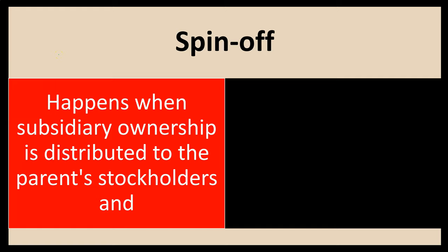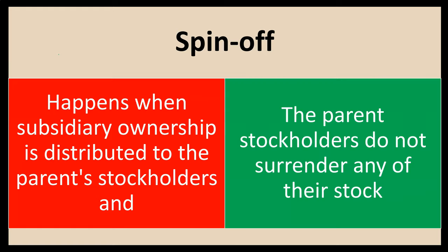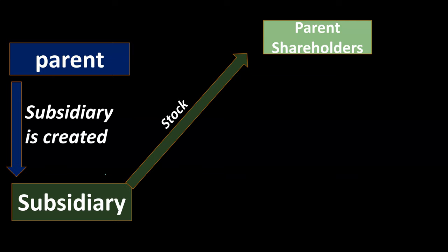We also want to be aware of the idea of a spinoff. A spinoff happens when subsidiary ownership is distributed to the parent stockholders and the parent stockholders did not surrender any of their stock. If we have a spinoff situation, the parent creates the subsidiary, puts assets and possibly liabilities into the subsidiary — resulting in a parent-subsidiary relationship — and then the stock of the subsidiary goes to the parent shareholders.